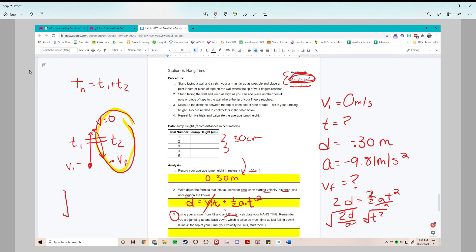So plugging in our numbers, time is the square root of two times our 0.3 meters negative, divided by our negative 9.81 meters per second squared. And if you look at the units, the meters will cancel.